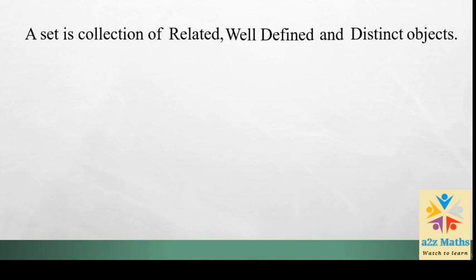So now let's start. The first thing: what is a set? A set is a collection of related, well-defined, and distinct objects. It is just a collection. You can collect numbers on the basis of some property — for example, square numbers, natural numbers, or prime numbers. In real life, someone can make a set of all the names of shapes or favorite colors. Whenever it is a collection following some rule, it is a set.